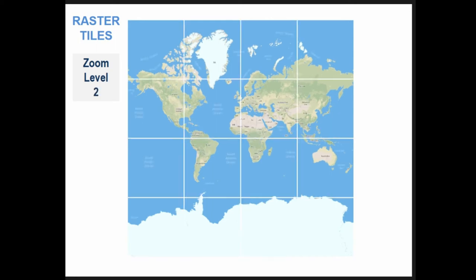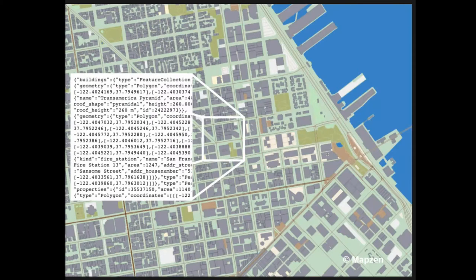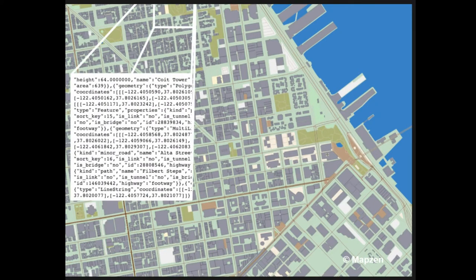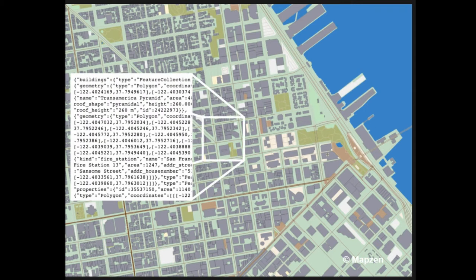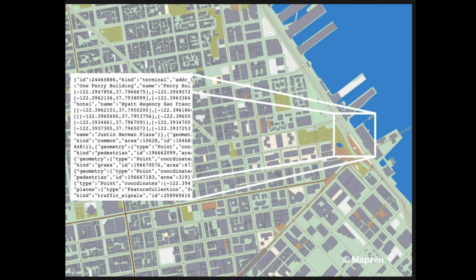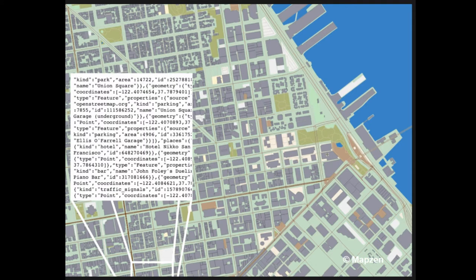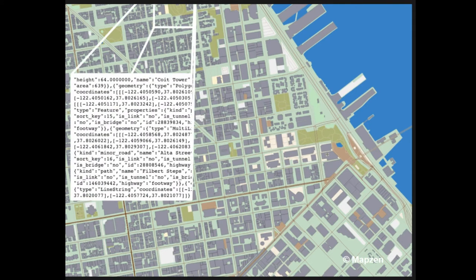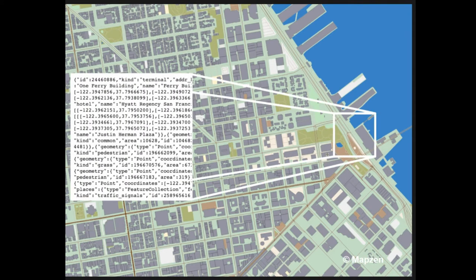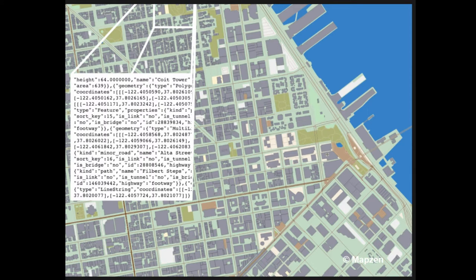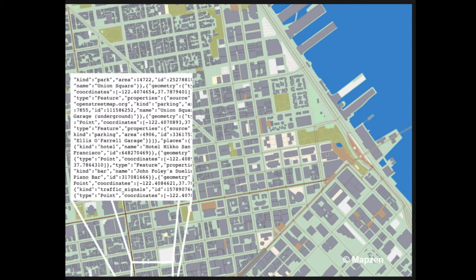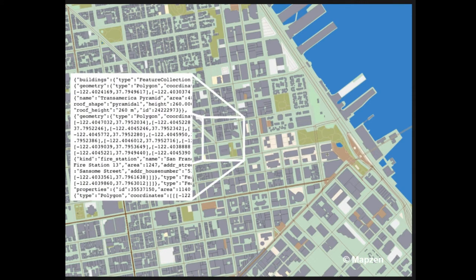Until now, web browsers used raster tiles — at different zoom levels, different image squares were calculated on the server and sent to the client. With vector tiles, rather than sending images the server sends vector data — a kind of binary format. The key difference is that rendering is done on the client side rather than the server side. This means you don't have to recreate a whole tile set when you want to change something small, like the color of forests, the sea, or the size of country names.